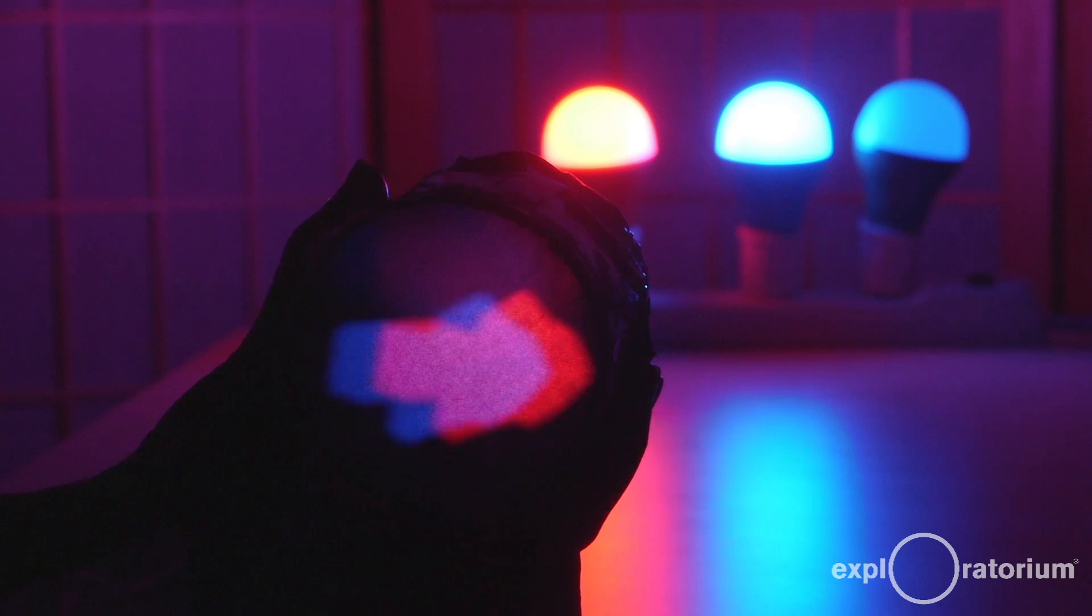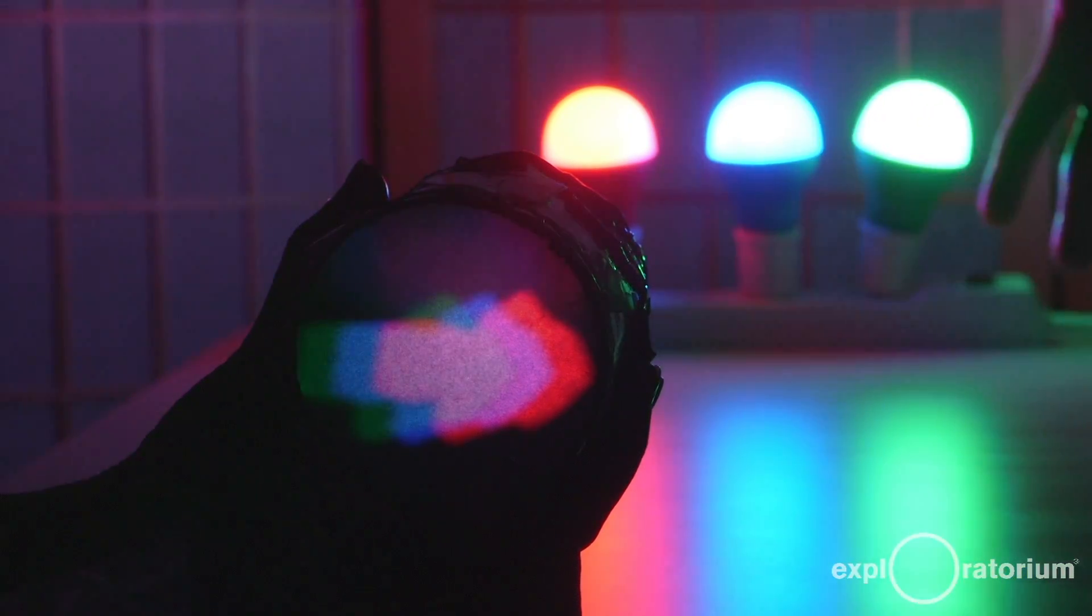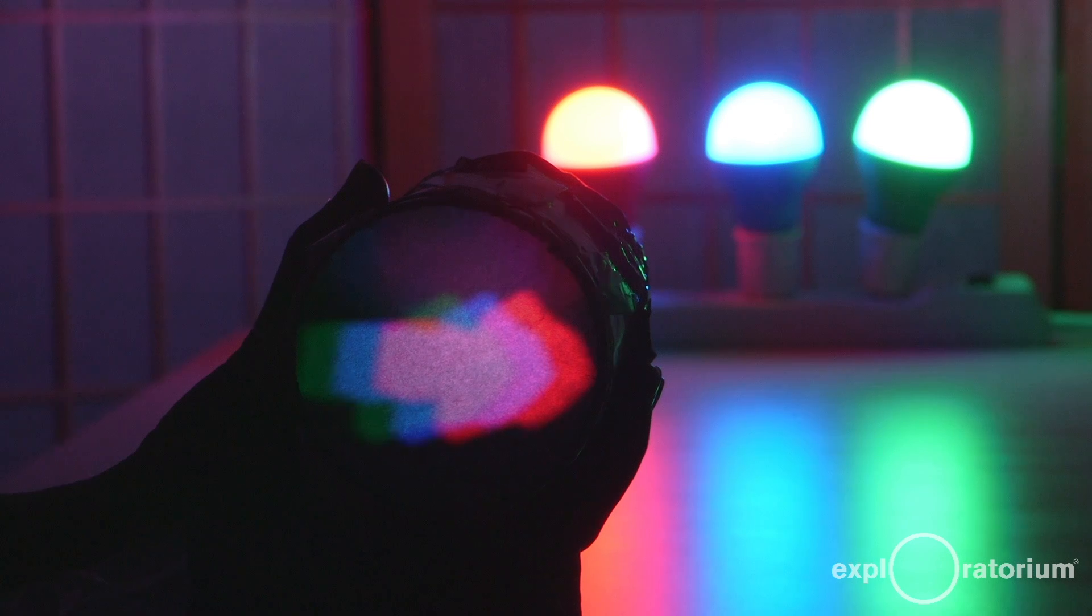Now, I'm going to turn all three bulbs on. Guess what you're going to see? What do you see now? You see white? You made that up too. Everything is made up. There's no white light over here. If you get equal amounts of red, green, and blue light, you make up white light. Isn't that interesting?